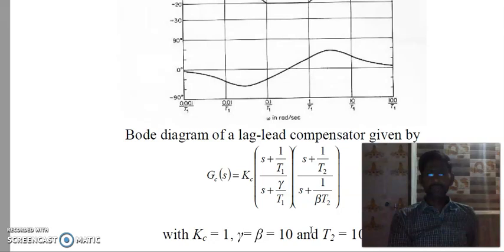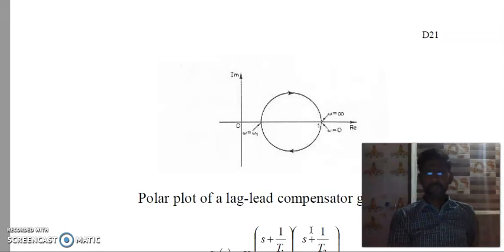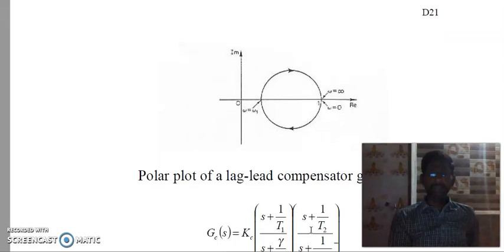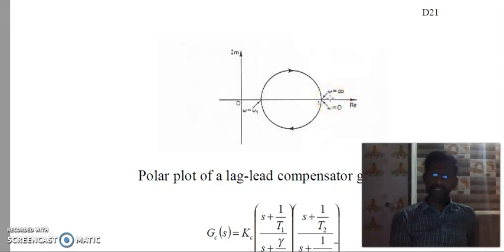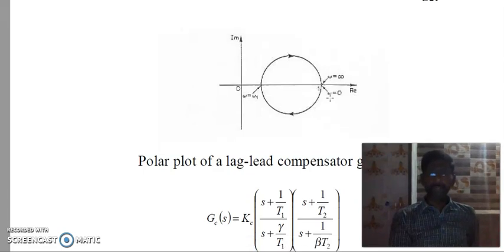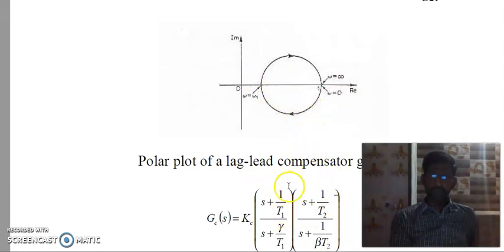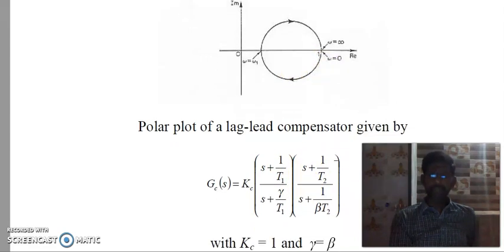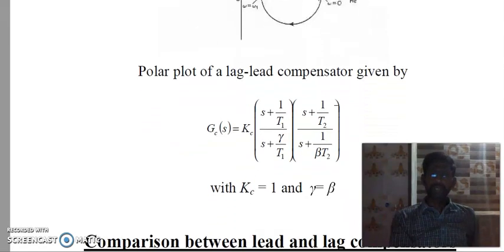Here Kc is 1, gamma equals beta, that is equivalent to 10, and T2 is equal to 10 T1. The polar plot of the lead-lag compensator looks like this. At omega equal to 0, the magnitude is 1 and the angle is 0 degrees. At omega equal to infinity, the magnitude is 1 and the angle is 0 degrees. So for this lag-lead compensator, the polar plot will be as shown, where Kc equals 1 and gamma equals beta.